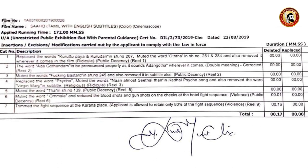What are the cuts? Cut number 1: Replace the words. Cut number 2. Cut number 3: Mute the words 'Fucking bastard.' Public decency.